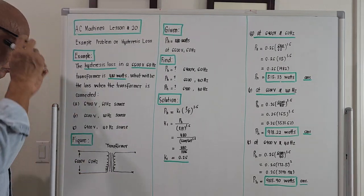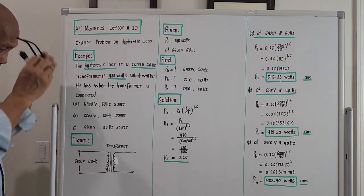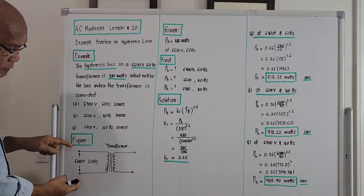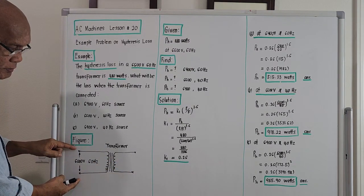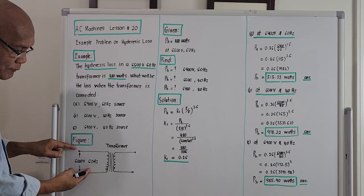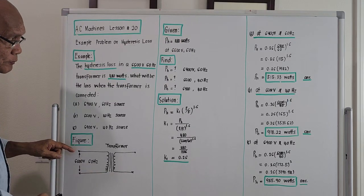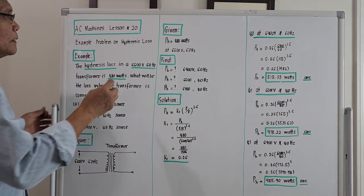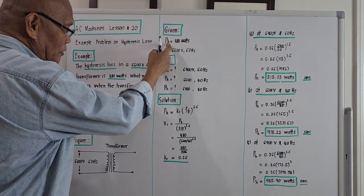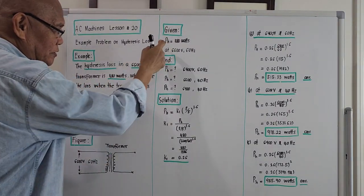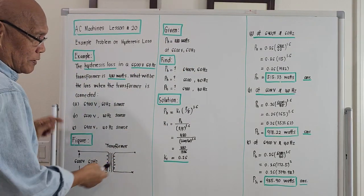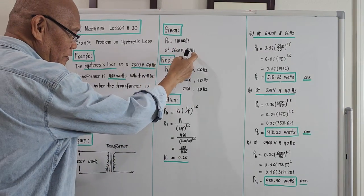Let's try to draw the figure. Our transformer is single phase, so this is the single-phase transformer here, with primary and secondary windings. The applied voltage is 6600 volts coming from the transmission line and frequency is 60 Hz originally. For the given problem, what is given is capital letter P with subscript h, meaning hysteresis loss, equal to 480 watts.